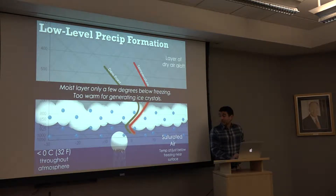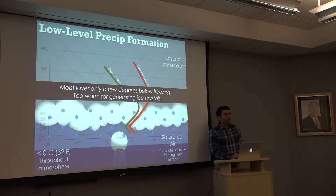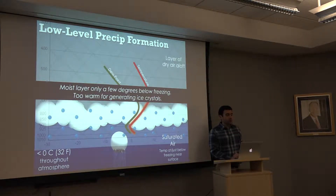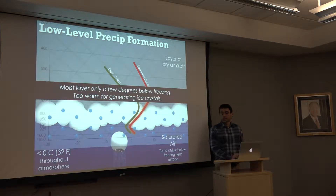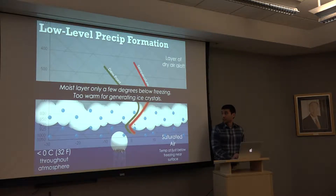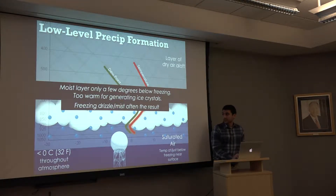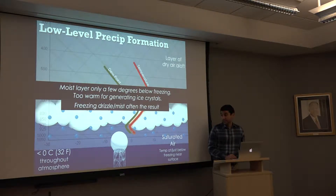The moist layer is only a few degrees below freezing — not like negative 10, 15, or 20 degrees Celsius. So where we're generating precipitation, it's too warm to generate ice crystals. As discussed with ZDR columns, you get supercooled liquid water — it's below freezing but not cold enough to freeze into a sleet pellet or ice crystal. So we get these little liquid drops of supercooled liquid water, and the often result from this scenario is freezing drizzle or mist — very light precipitation, but things can get quite slick.